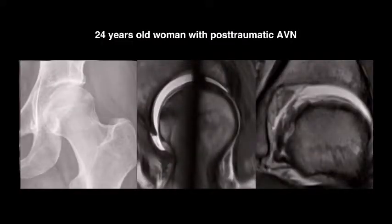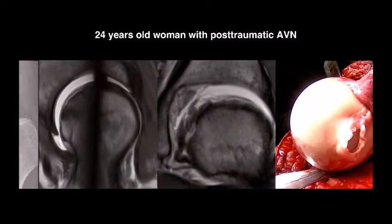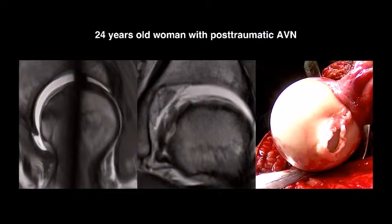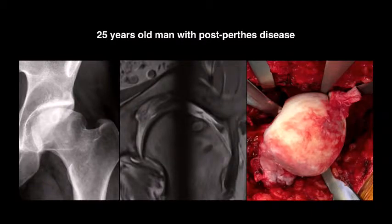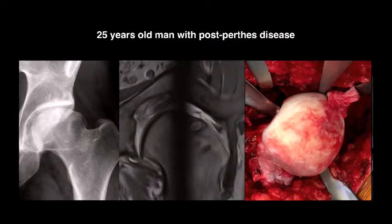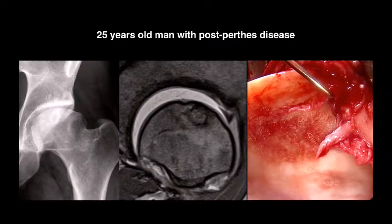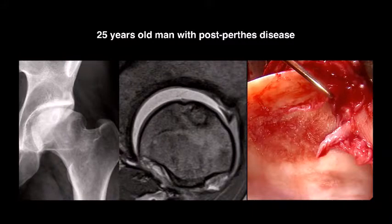Here are some illustrative cases. First, a 24-year-old woman with post-traumatic AVN. You can see the delamination on the radial image and cartilage damage on the coronal plane, with the corresponding intraoperative finding confirming this. Traction clearly enhances the quality of preoperative imaging here. Another case is a 25-year-old man with post-Perthes disease. The MRI shows severe cartilage damage in the central portion, which is not always nicely visible on regular MRI, and the corresponding intraoperative picture correlates well with the traction MRI findings.